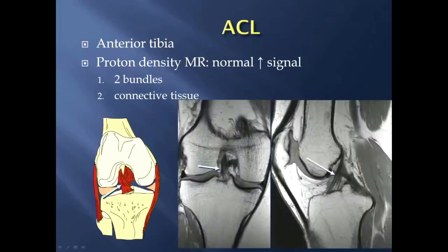Starting with the ACL, it's called the anterior cruciate ligament because it's positioned more anteriorly. Notice on the sagittal proton density image that the majority of the ligament is anterior to the PCL, and it inserts onto the anterior portion of the tibia.